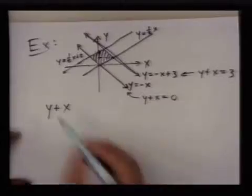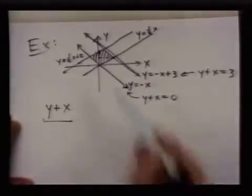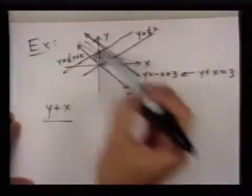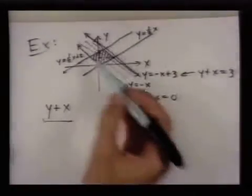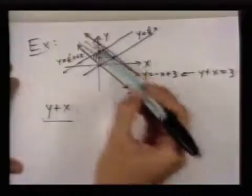So in some sense, this quantity tells you which of these parallel lines that you're on. If you know the value of this, you can say which parallel line you're on.